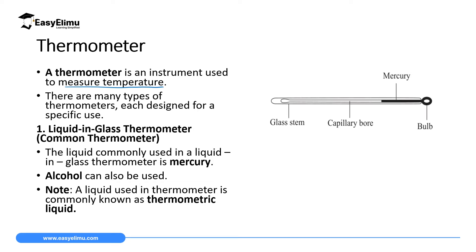The first category of thermometers we have is a liquid-in-glass thermometer, which we call a common thermometer, as you can see on the screen. The liquid commonly used inside a liquid-in-glass thermometer is mercury. However, alcohol can also be used. It is important to know that a liquid used in a thermometer is commonly known as a thermometric liquid.